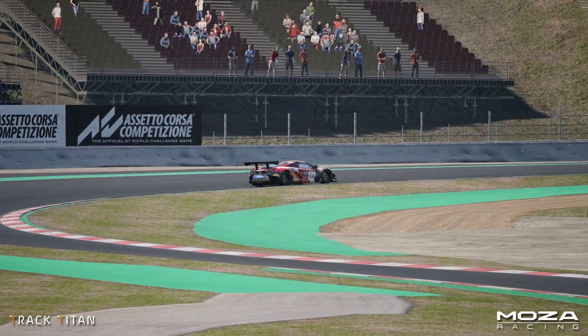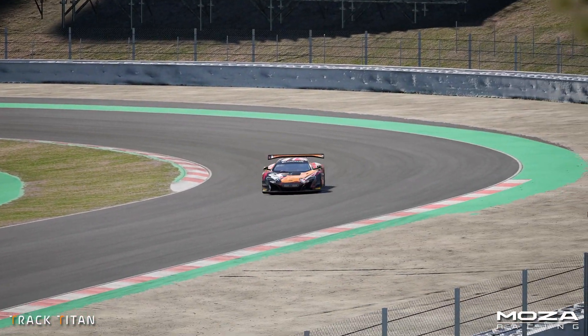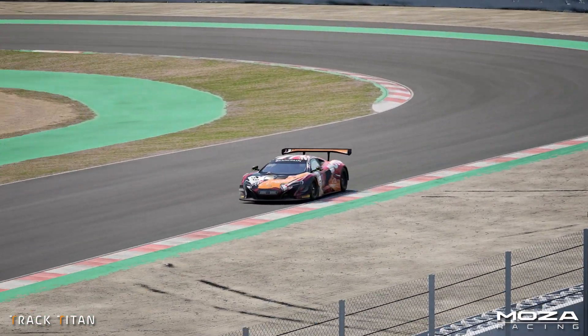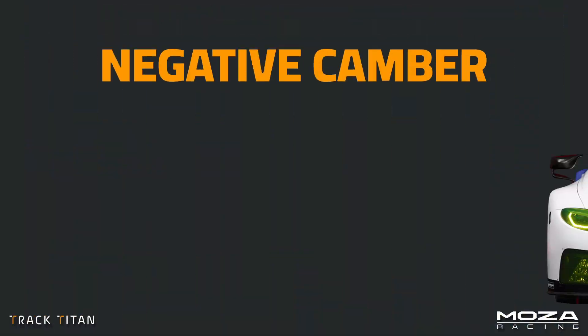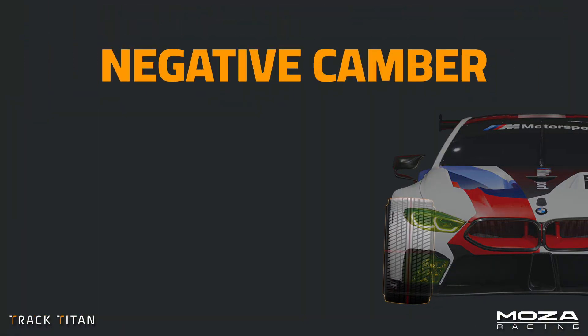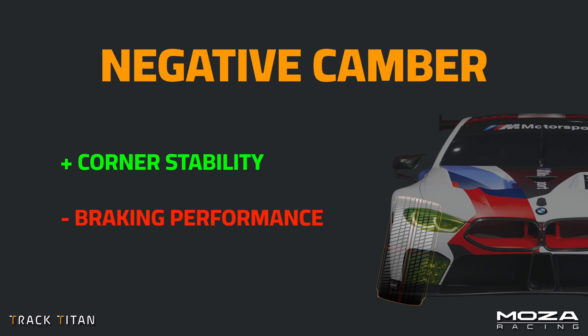So by using camber we can help ensure a larger contact patch under that additional load, and there are three types to consider. Negative camber is where the top of the wheels angle towards the centre of the car. This provides additional corner stability as there is a larger contact patch under additional load, but it reduces braking performance due to a smaller area of contact on the straight.